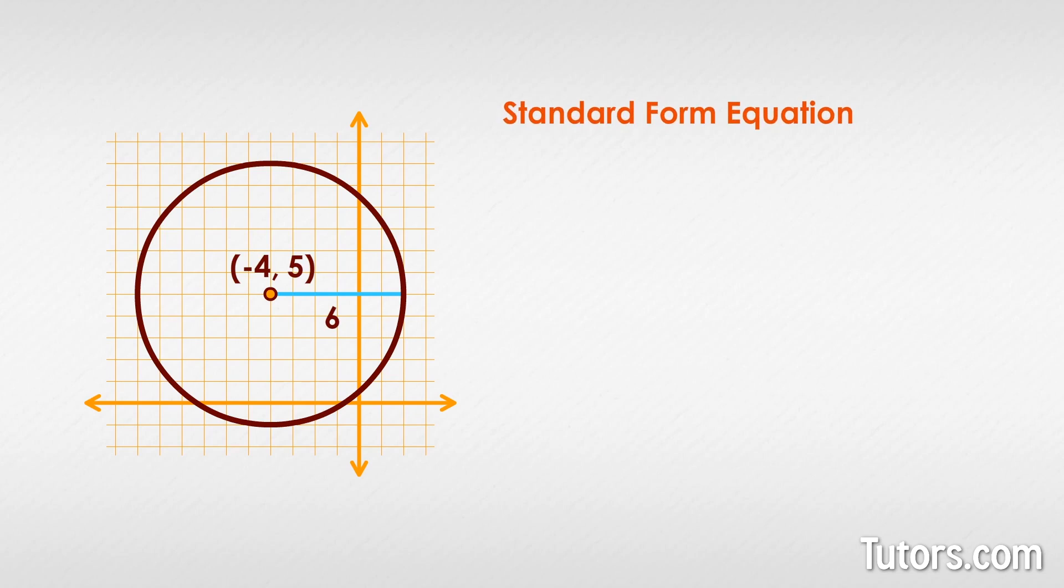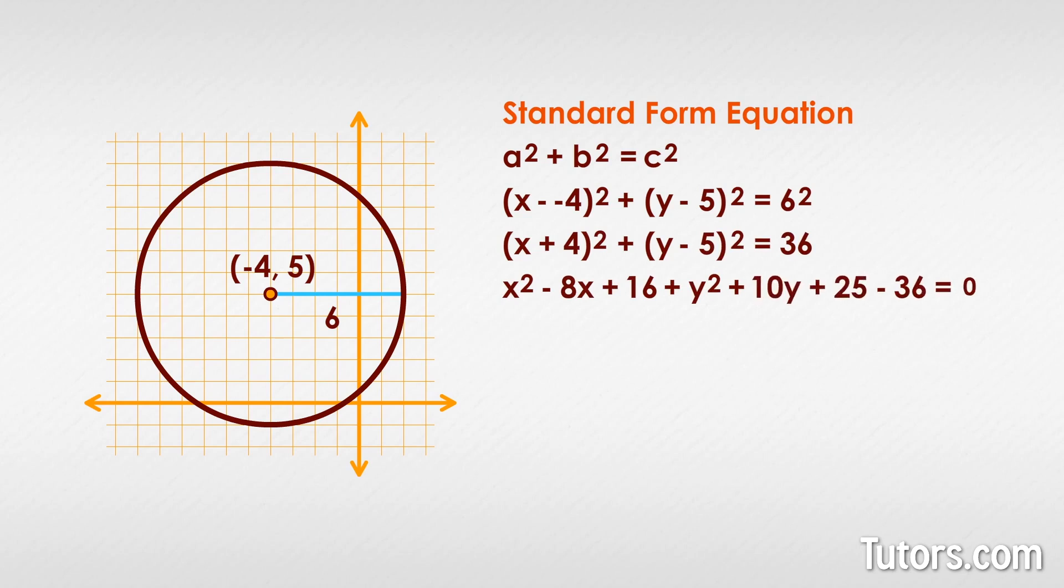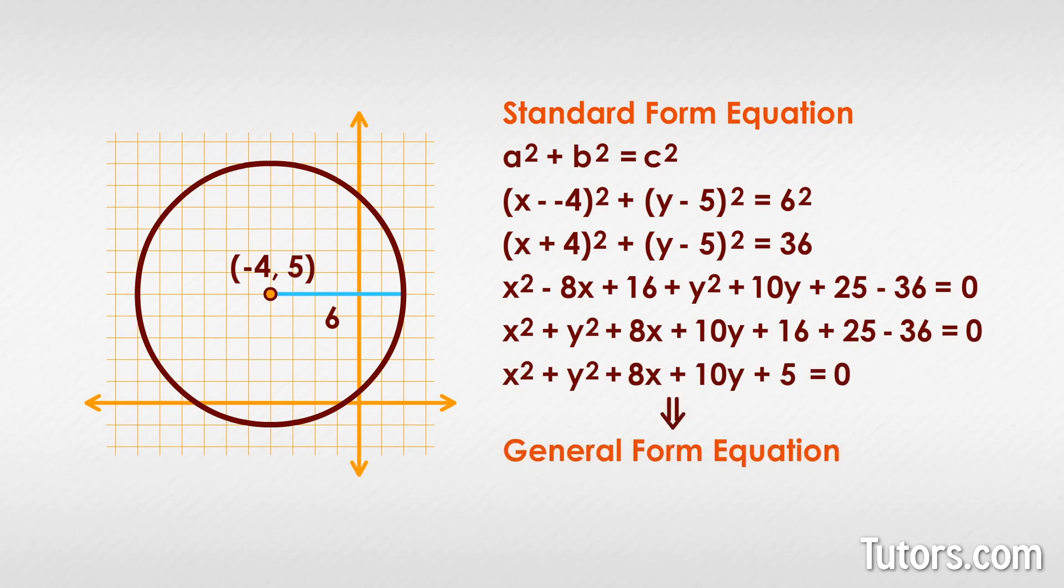which is really just a derivation of the Pythagorean theorem, a squared plus b squared equals c squared. Expand and set it to equal 0. Combine like terms, and simplify. That is the general form of the equation, derived from the standard form, which derives from the Pythagorean theorem.